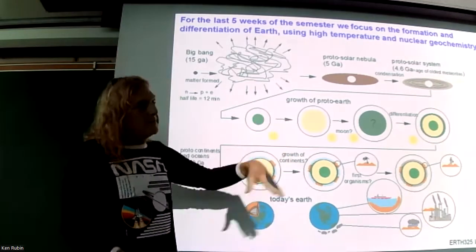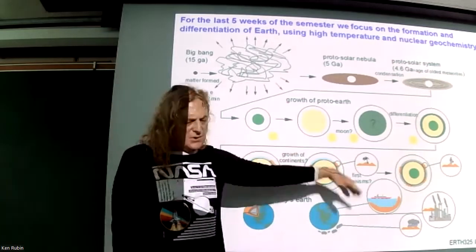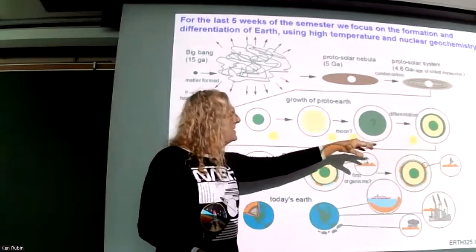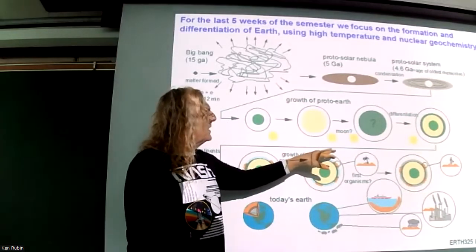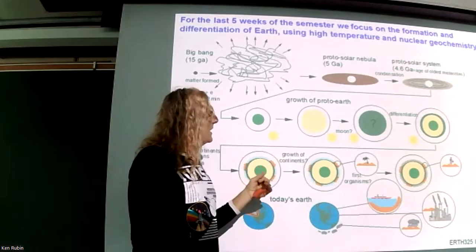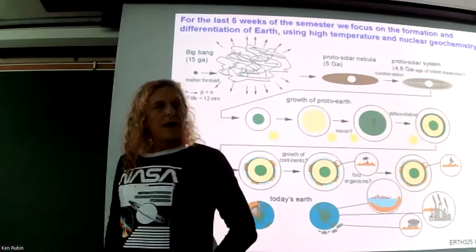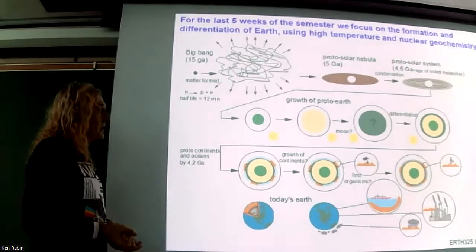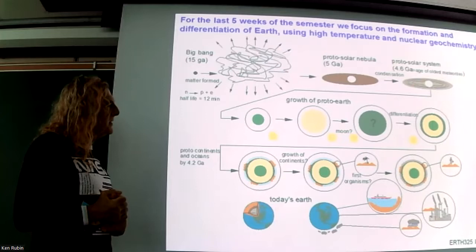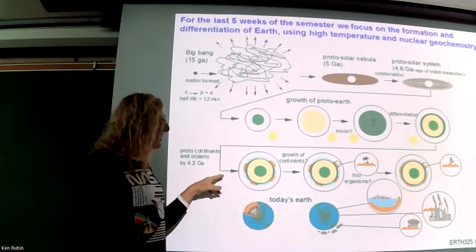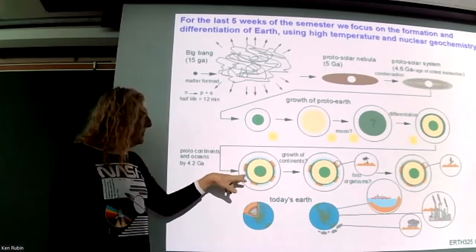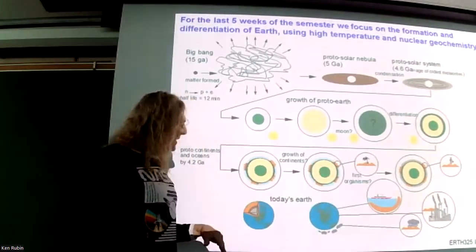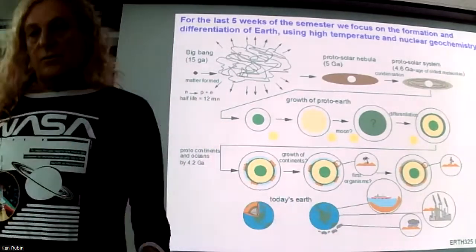The growing Earth has a moon — a Mars-sized collision event with an object called Theia — then it differentiates. There are a lot of questions about how much differentiation was already happening by the time our Moon formed. We'll talk about the chemical evidence for that, including radioisotopes which allow us to tell time. As we move on, we'll discuss the growth of the continents, development of the ocean and atmosphere, when the first organisms evolved, and getting to today's Earth — these will mostly be chemical constraints.